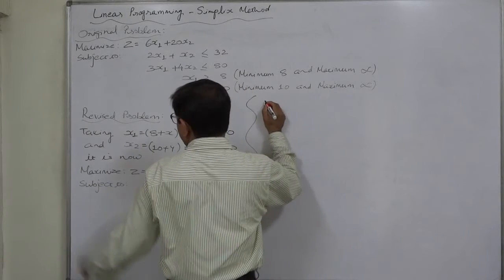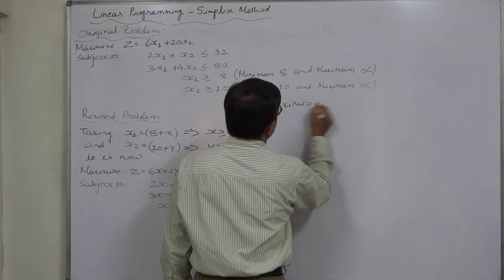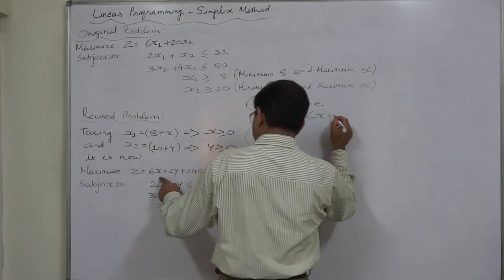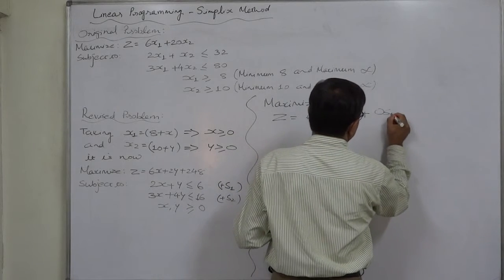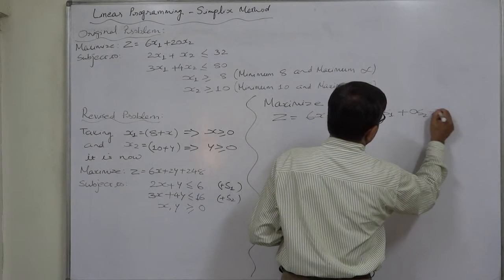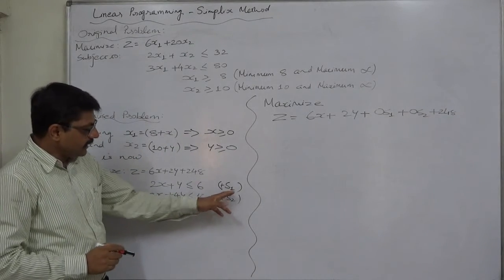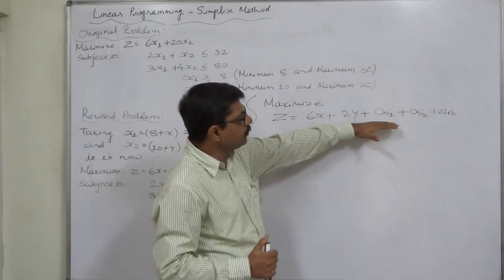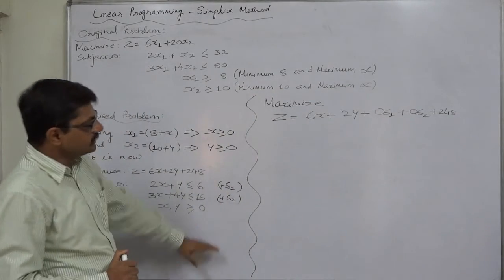So ultimately, the simplified problem will be maximize z equals to 6x plus 20y plus 0s1 plus 0s2 plus 248. Slack variable is a virtual variable and hence there will be no revenue or margin available from the slack variables.